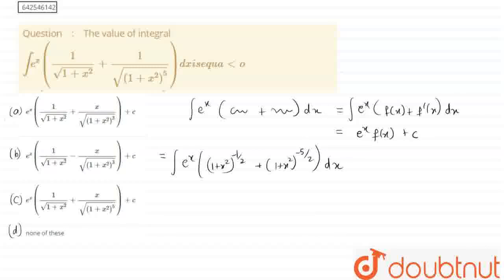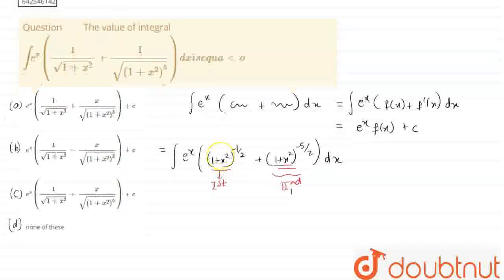If you look clearly, this term is not immediately in the f(x) and f'(x) form — one term is not the differentiation of the other. So what we are going to do here is create the differentiation relationship. Let the first term be f(x) and the second term be something we'll address shortly.